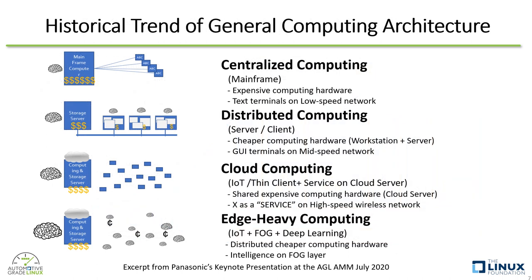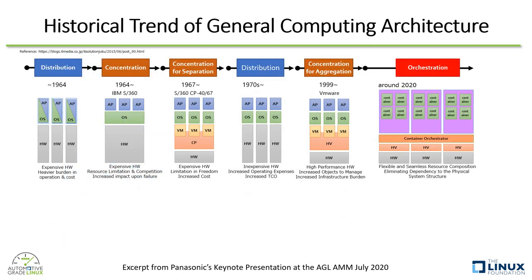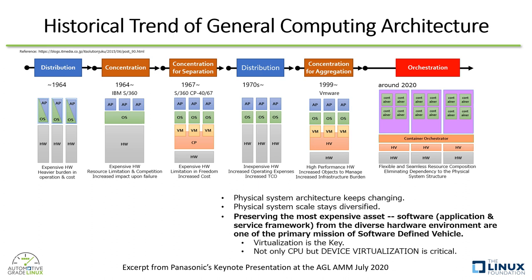Now let's have a look at the overall history of virtualization. In the historical trend of general computing architecture, it has been going back and forth between centralized and distributed architecture, driven by the fluctuation of cost and performance of processing, memory, and communication. This means there is no constant optimal answer. Physical architecture keeps changing, and physical system scale stays diversified even in the same architecture. In such a variable situation, virtualization has been constantly the key technology to preserve our most expensive asset — software. This is exactly one of the primary missions of software-defined vehicle.